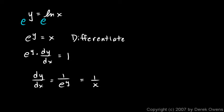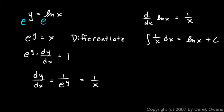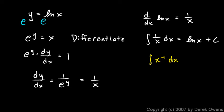It's worth noting that something immediately follows: if the derivative of ln(x) is 1/x, then the integral of 1/x dx must be the natural log plus C. This is significant because 1/x is actually x to the negative one, and we can't integrate that with the power rule — we'd end up with a zero denominator. But it turns out we can integrate it, and we just did by reversing this derivative.